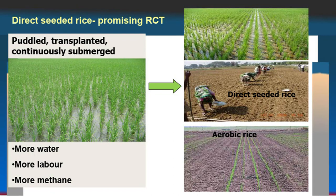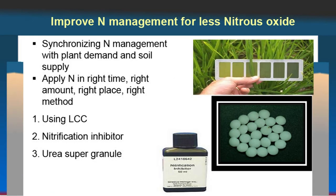Direct seeded rice is another promising resource conserving technology. On one side there is puddled transplanted continuously submerged rice — requiring more water, more labour and more methane emission. But there are options to grow rice without puddling and without transplanting — direct seeded rice — which saves water resources and reduces methane emissions from aerobic rice. The area under aerobic rice or direct seeded rice is slowly increasing in the country, which is a matter of great satisfaction.